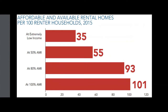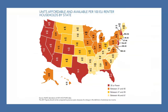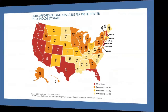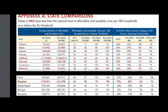At extremely low income, there are only 35 units. At 50% of AMI, there are only 55 households. You really have to be up to 80% and above before there's sufficient households for families to live. Michigan is at 38% — not the worst, but certainly on the bottom for affordable households per ELI renter. Michigan has 72% of extremely low income families with extreme housing cost burden, meaning housing costs each month are over 50% of their income. That should be highlighted in red — we have a problem with affordable housing.